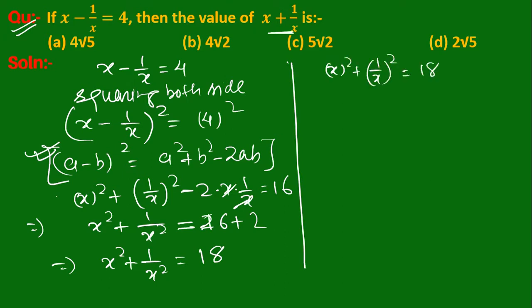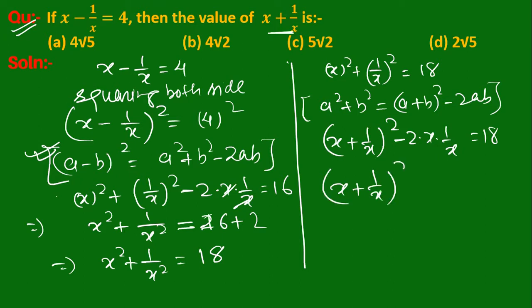Now we use the identity a square plus b square is equal to (a plus b) whole square minus 2ab. So (x plus 1 upon x) whole square minus 2 into x into 1 upon x is equal to 18. Therefore (x plus 1 upon x) whole square equals, the x's cancel, 18 plus 2.